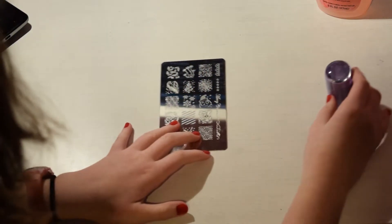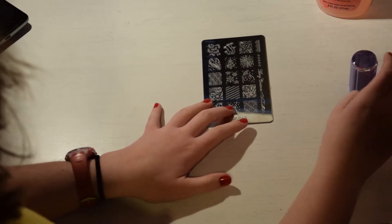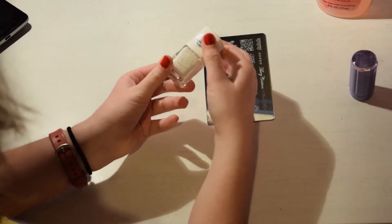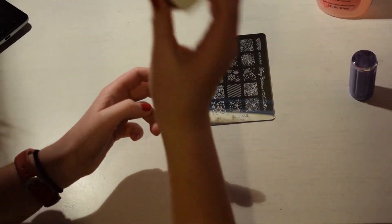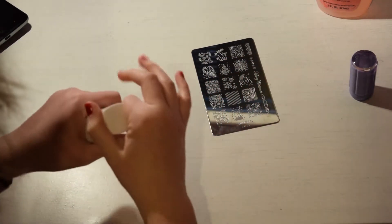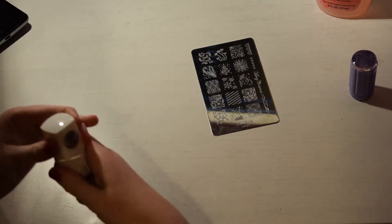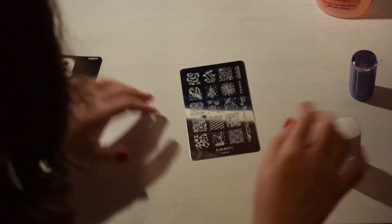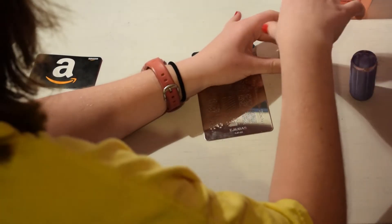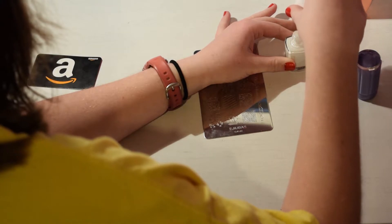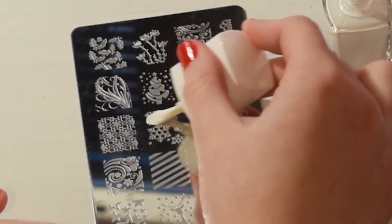So now what I'm going to do is I'm going to do a holiday theme because it's almost Christmas. And I got another white LA Colors. And I'm going to do this snowflake pattern right here. And I'm going to see if I can get to work this time around. So I'm just going to take the fresh nail polish.